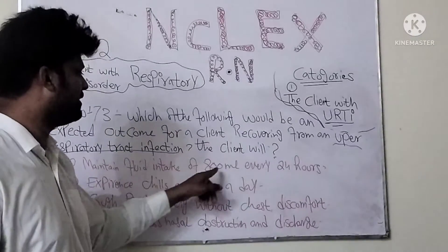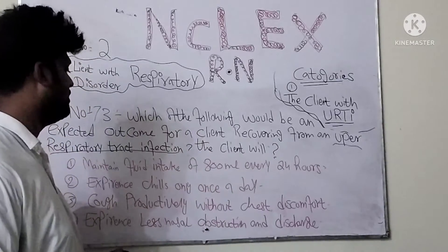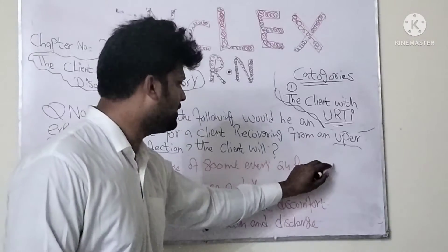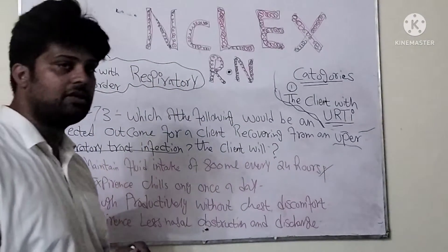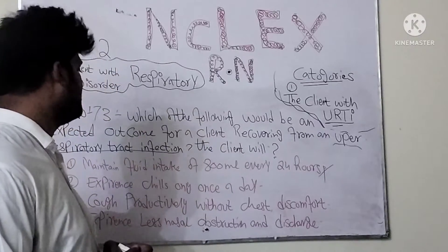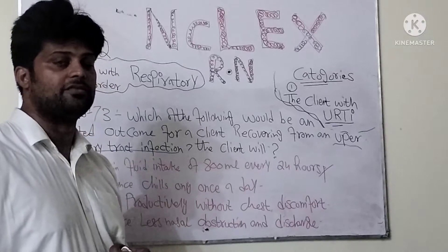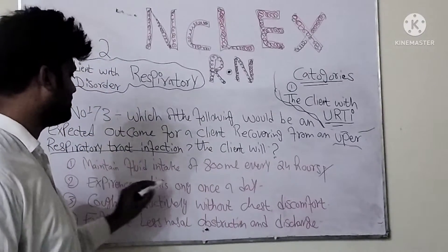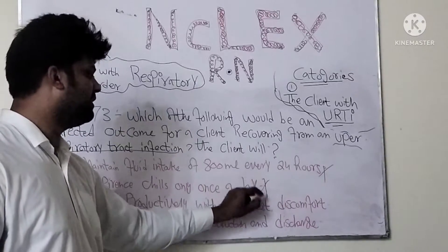Option A: maintain fluid intake of 800 every 24 hours. Now, the patient is drinking water every day — this is very essential, but this is not our first priority of recovery from upper respiratory tract infection. Option B: experience chills only once a day — this is also an incorrect answer.